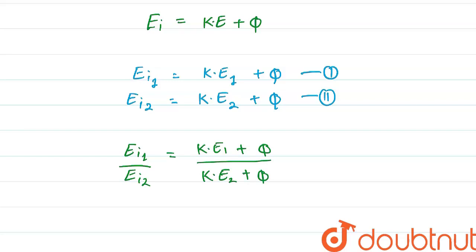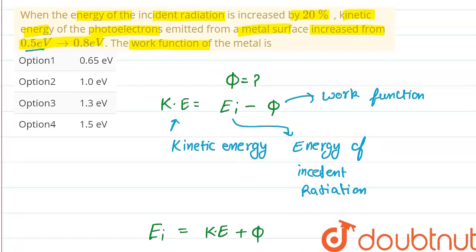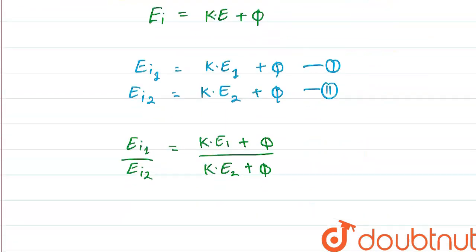Now putting the values, we are given that the kinetic energy is increased by 0.5 to 0.8 when the radiation is increased by 20 percent.